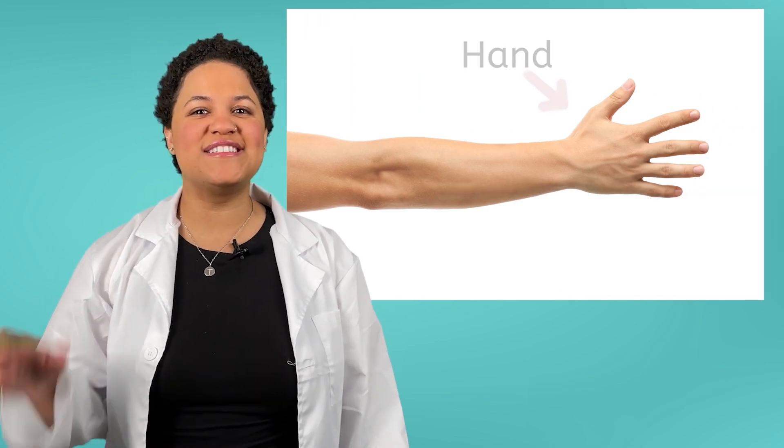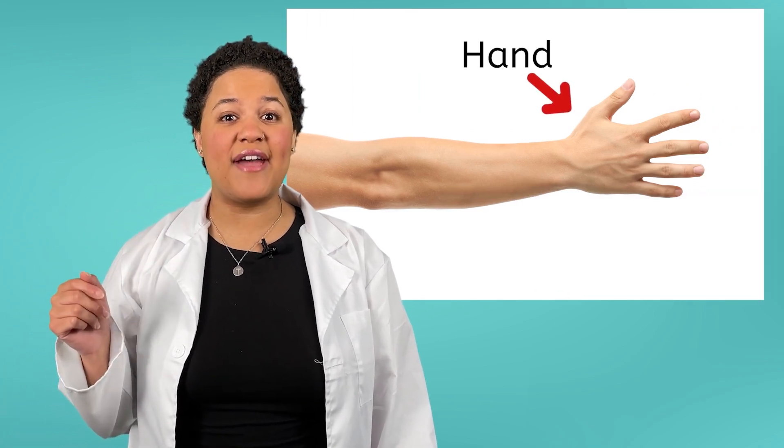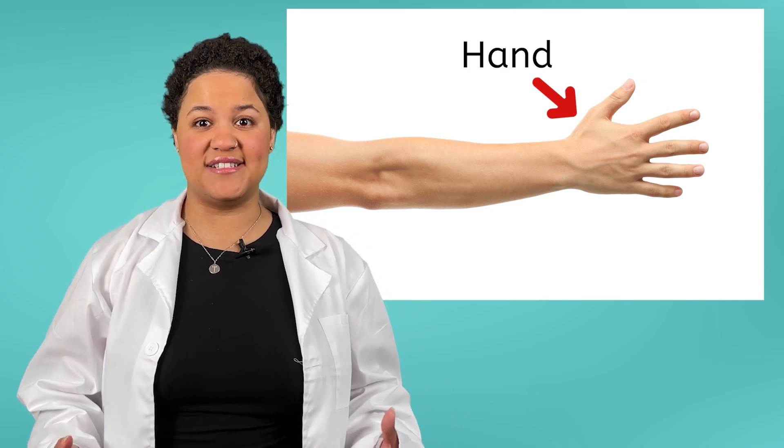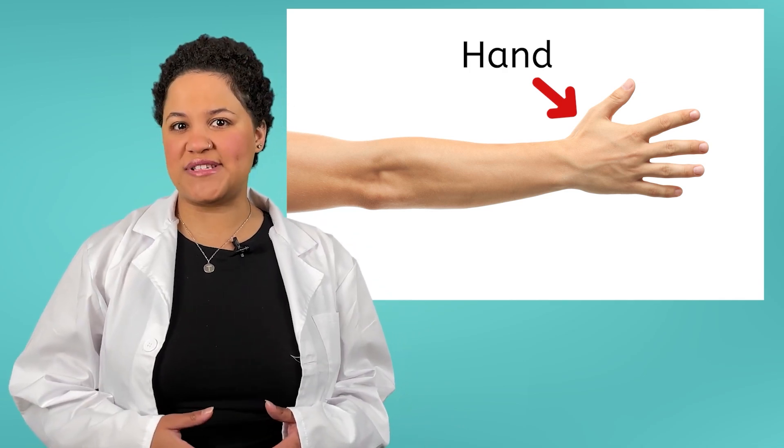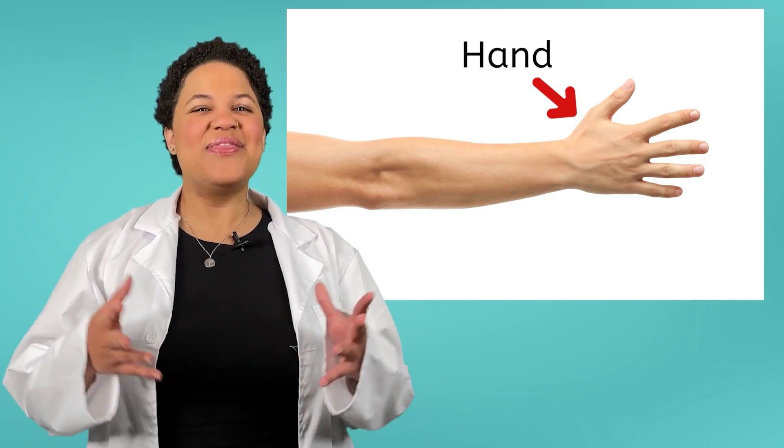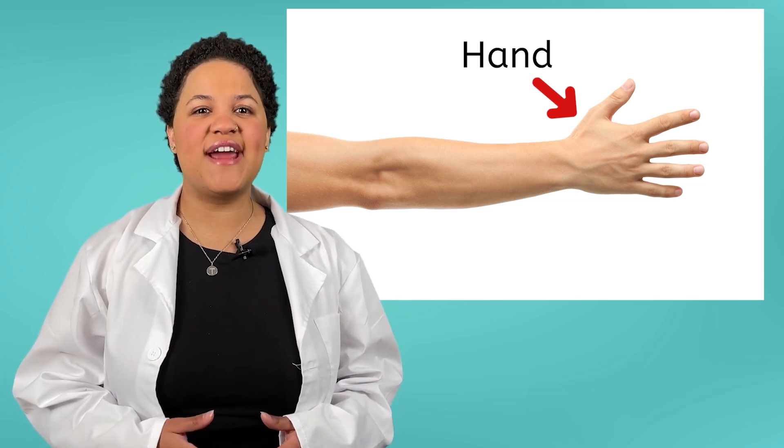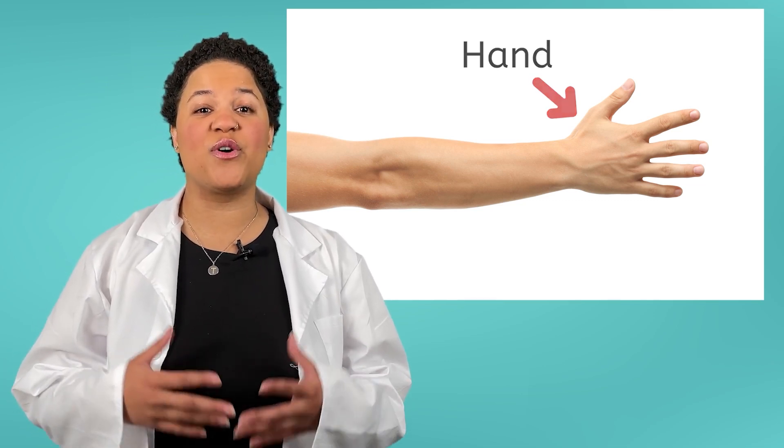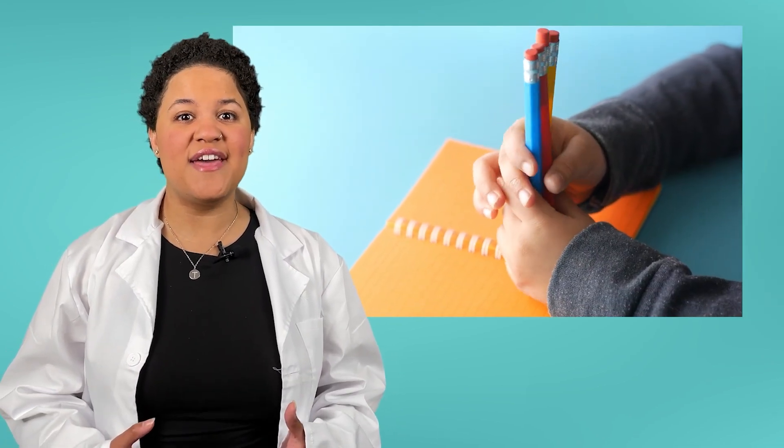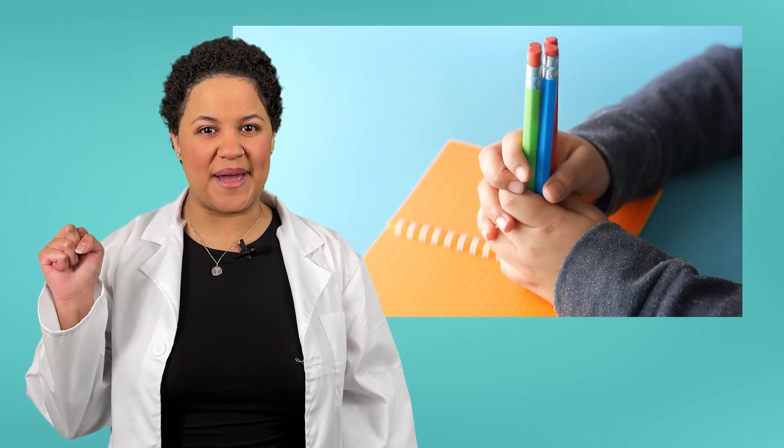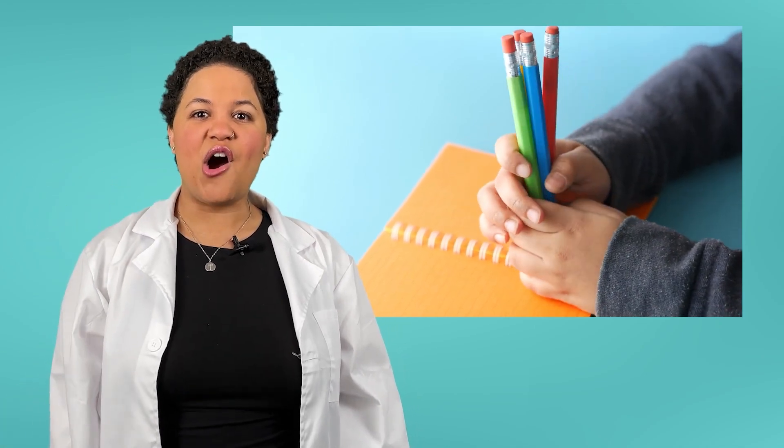At the end of the arm is the hand. We learned about hands when we learned about the five senses. What sense does it represent? That's right, touch. We often use our hands to feel sensations from the world around us. Hands are especially useful when holding things thanks to your fingers, which are able to move and grip.